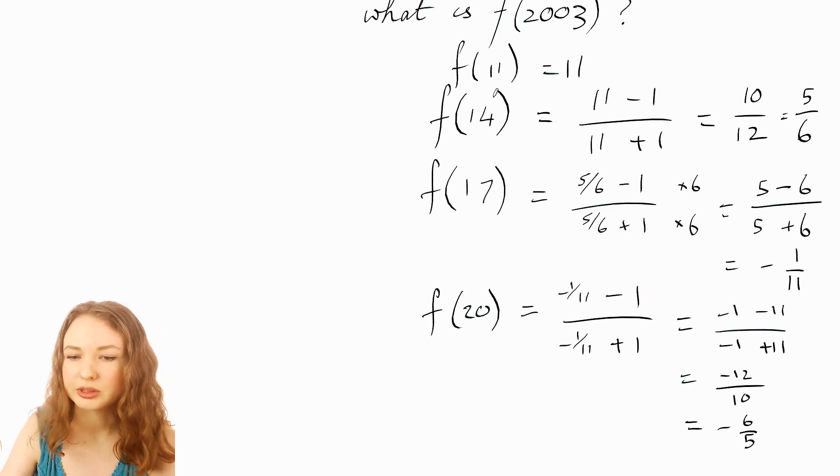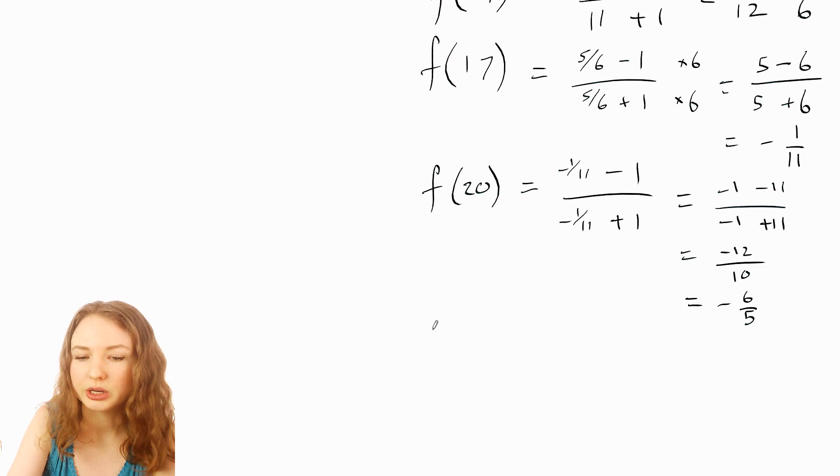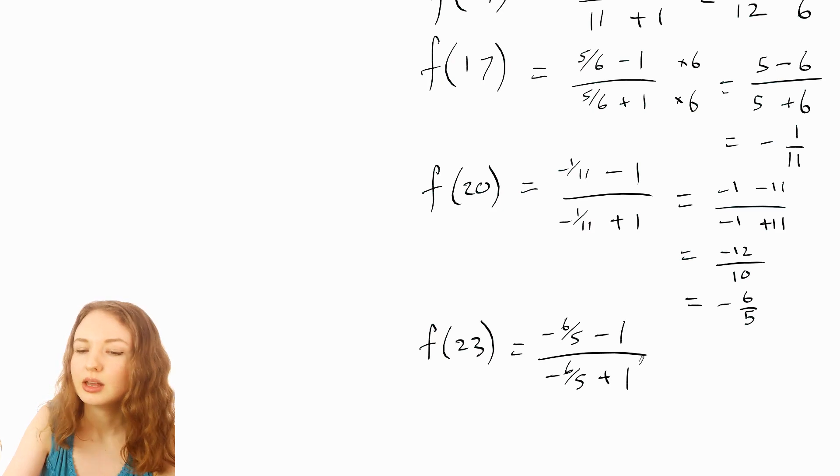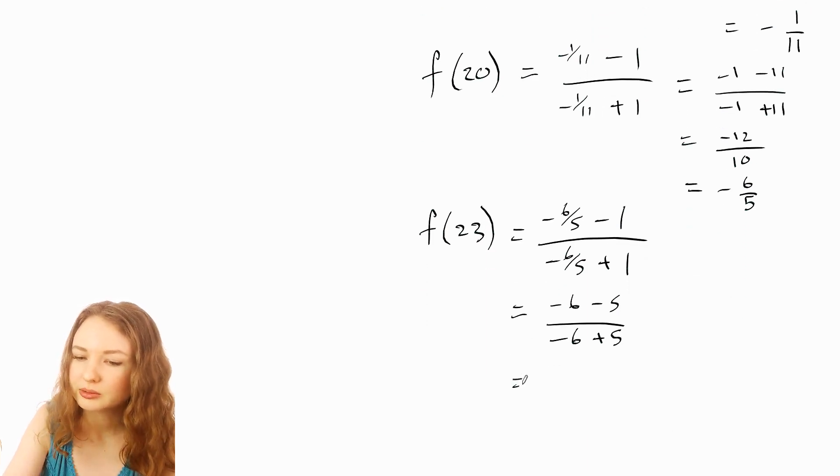So let's see what happens with the next number. So we can go up to f of 23 which will be the last one minus 1 over that plus 1. Again to get rid of the fractions within the fraction multiply top and bottom by 5 which is going to give you negative 6 minus 5 over negative 6 plus 5. And then that makes negative 11 over negative 1 which is just positive 11.